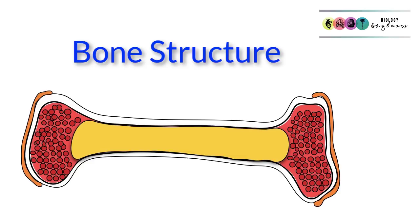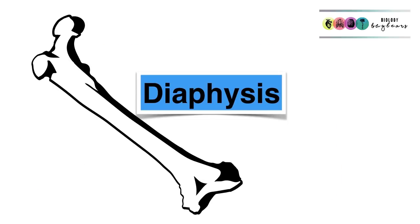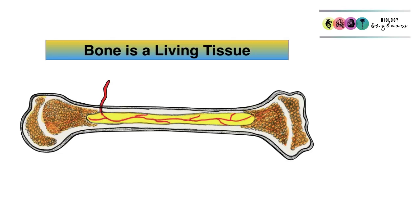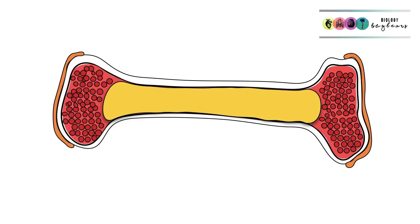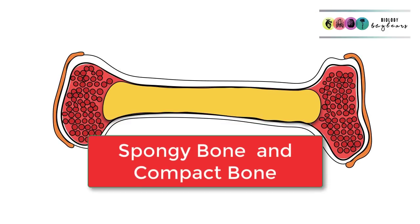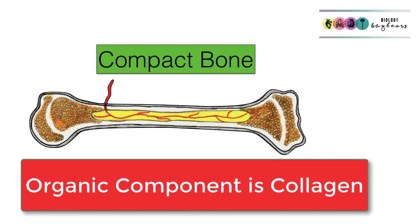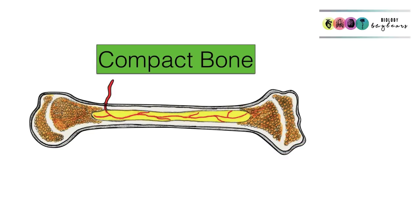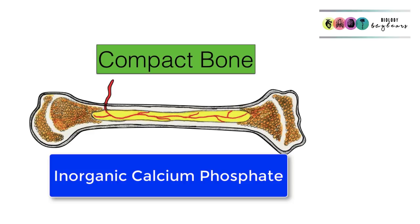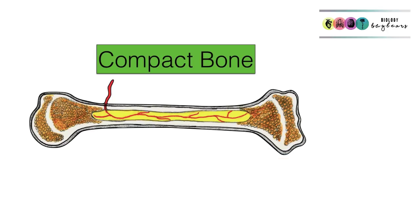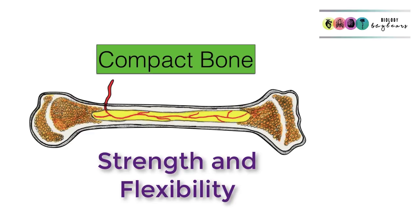So let's go on to bone structure. The long part is known as the diaphysis and the ends are known as the epiphyses. It's important to remember that bone is a living tissue — it's a type of connective tissue, and we sometimes forget this because of its hardness. There are two types of bone: spongy bone and compact bone. Compact bone is found on the whole bone surface but is thickest at the diaphysis. It has an organic component called collagen which gives it flexibility, and an inorganic component — calcium phosphate — which gives it particular strength. It has many bone cells called osteocytes embedded within it and has a good blood supply, giving compact bone both strength and flexibility.